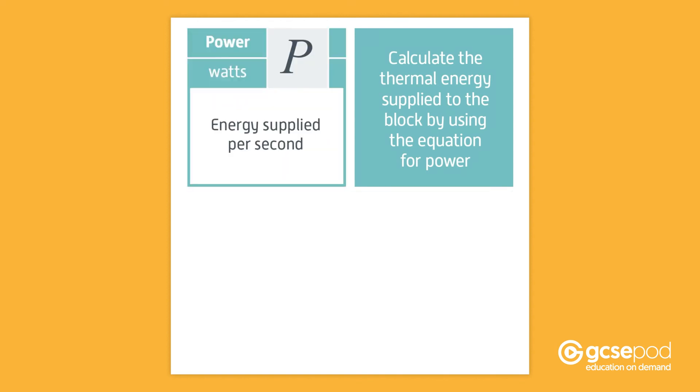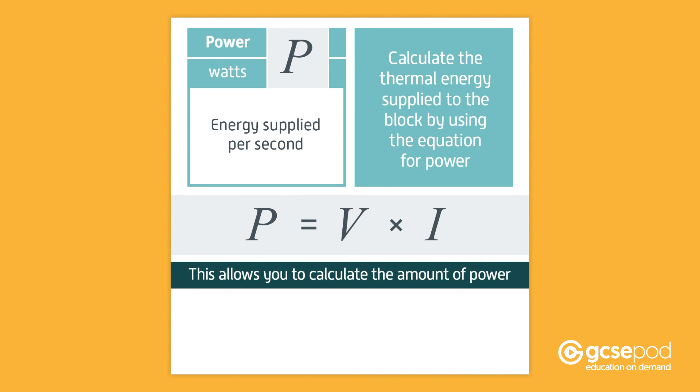Power, as measured in watts, is the energy supplied per second. In electrical terms, power is voltage multiplied by current. P equals V multiplied by I. Using this equation will enable you to calculate the amount of power.